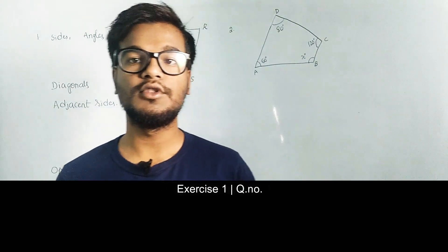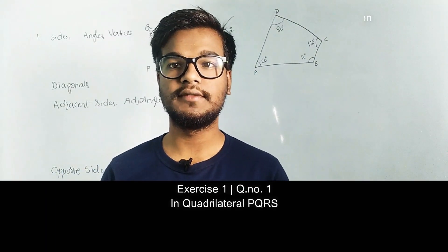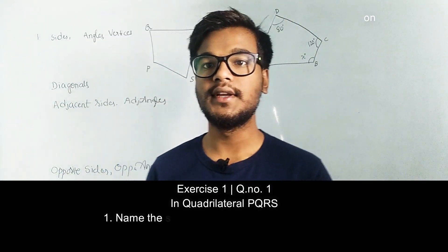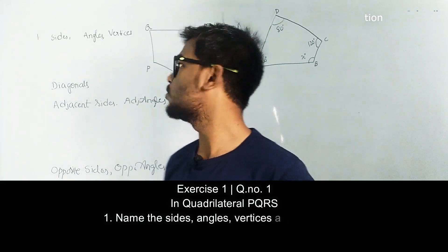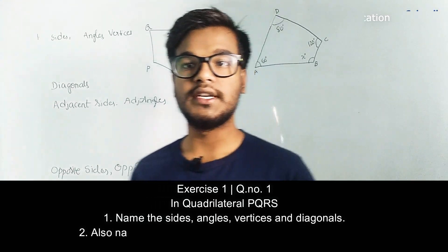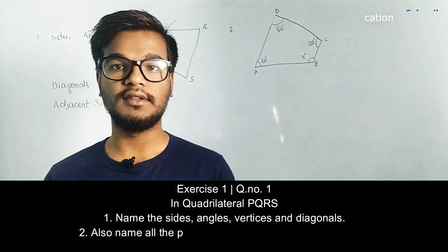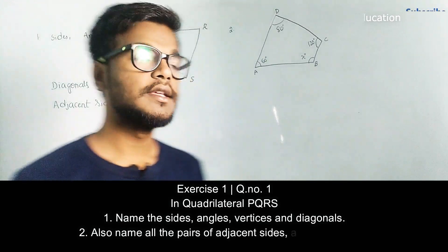In this module we are going to discuss the solutions for the first question on quadrilaterals in exercise one. Here they have given a quadrilateral and we have to write the sides and all that they are asked.